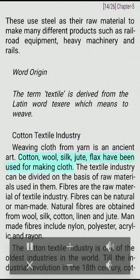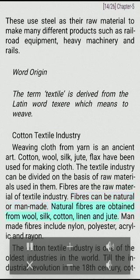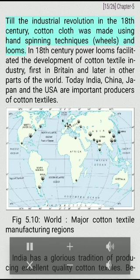Weaving cloth from yarn is an ancient art. Cotton, wool, silk, jute, and flax have been used for making cloth. The textile industry can be divided on the basis of raw materials used. Fibers are the raw material of the textile industry. Fibers can be natural or man-made. Natural fibers are obtained from wool, silk, cotton, linen, and jute. Man-made fibers include nylon, polyester, acrylic, and rayon. The cotton textile industry is one of the oldest industries in the world. Till the industrial revolution in the 18th century, cotton cloth was made using hand-spinning techniques, wheels, and looms.